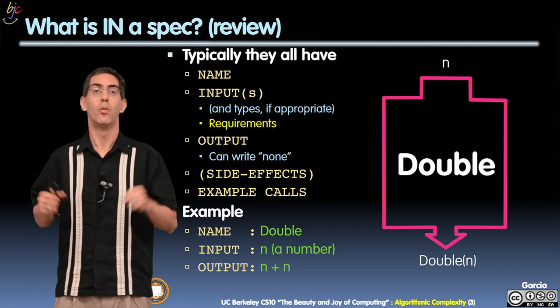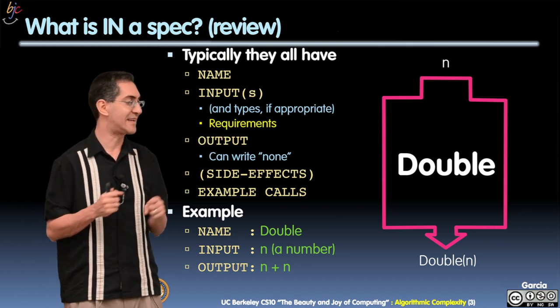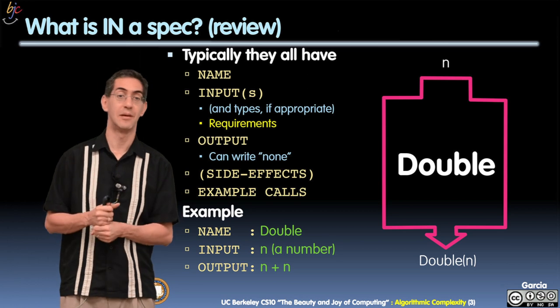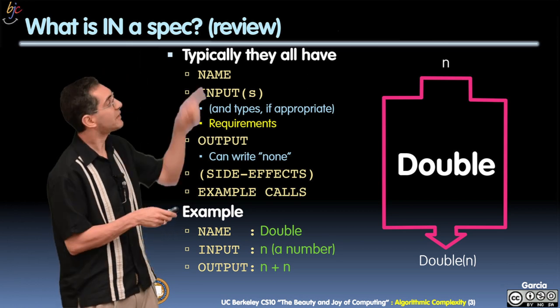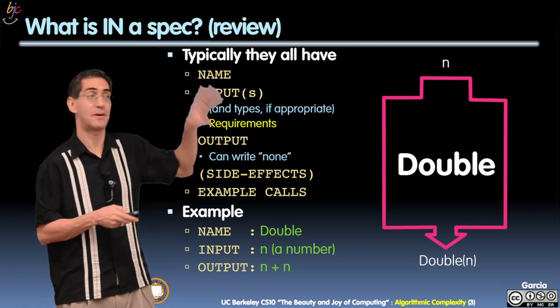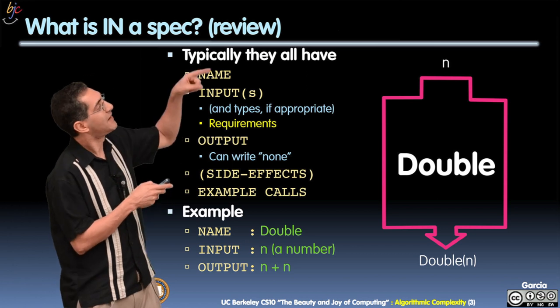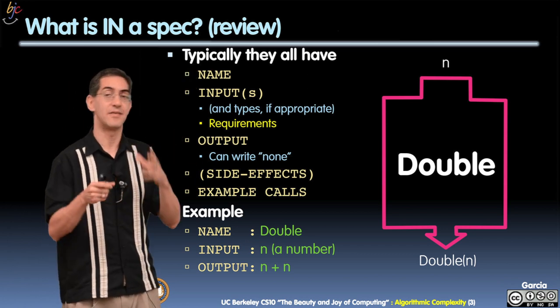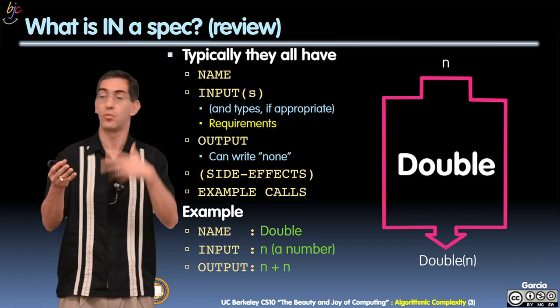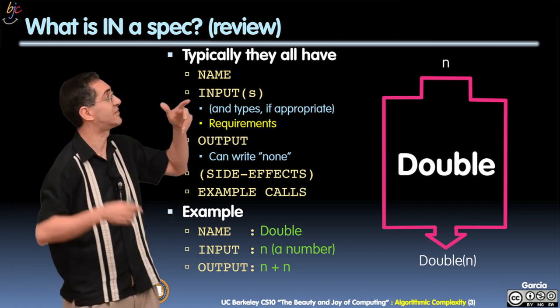So for example, what's in a spec? Here's a function called double. It takes in a number n, outputs the double of that. So here's a spec typically. We're going to have a name, an input which might have the input type. We talked about the types: words, sentences, numbers, integers, etc.